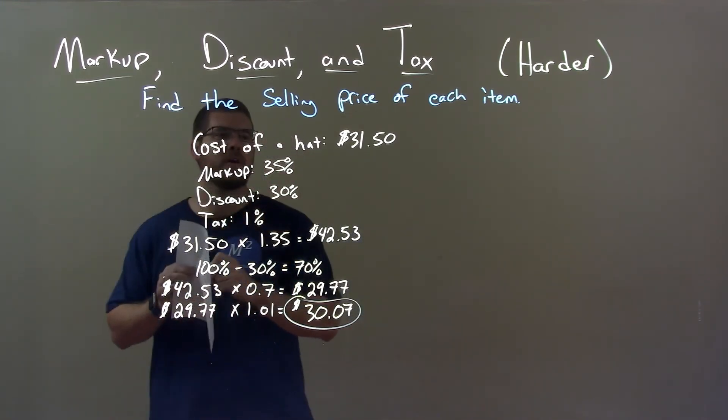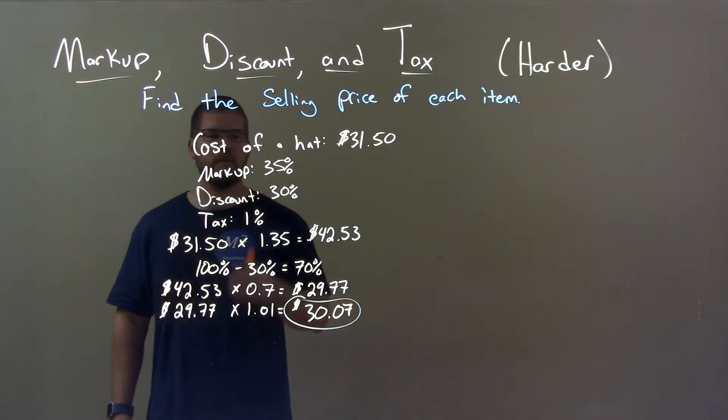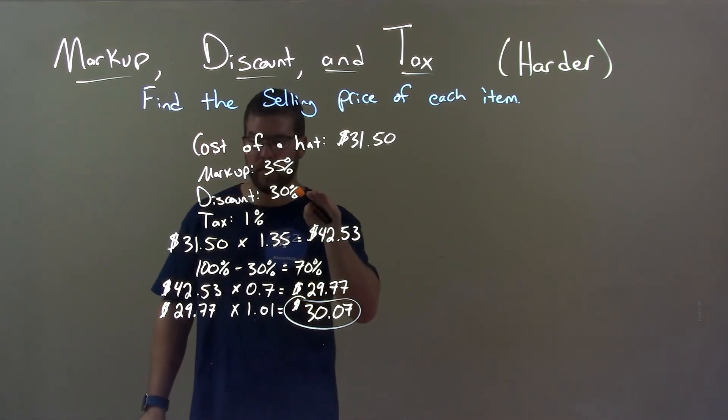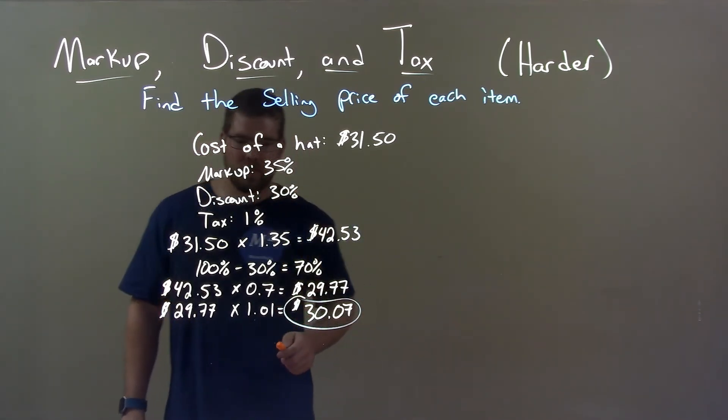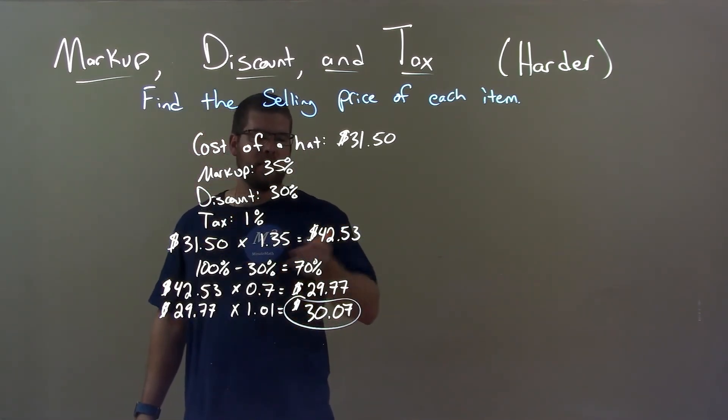So quick recap, we're given the cost of a hat is $31.50. Its markup 35%, discount 30%, tax 1%. We first applied our markup, got $42.53. 30% discount is 70% of that price.